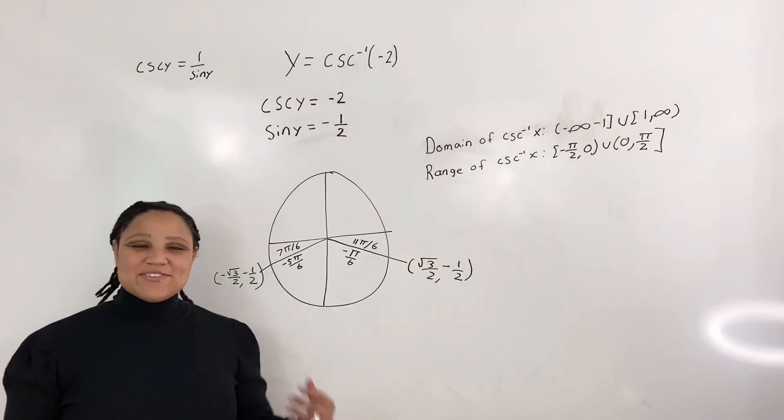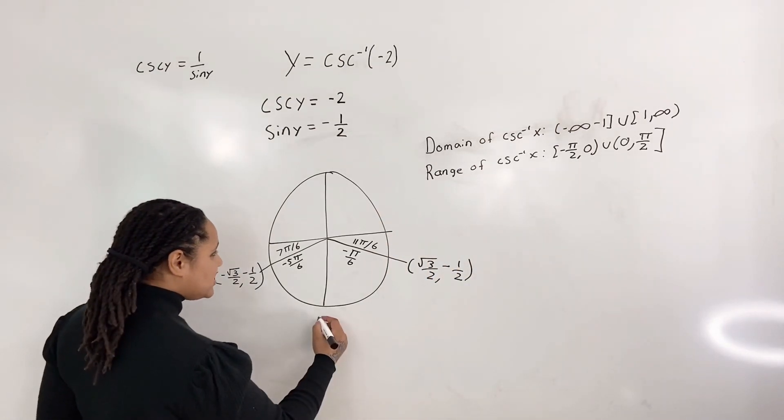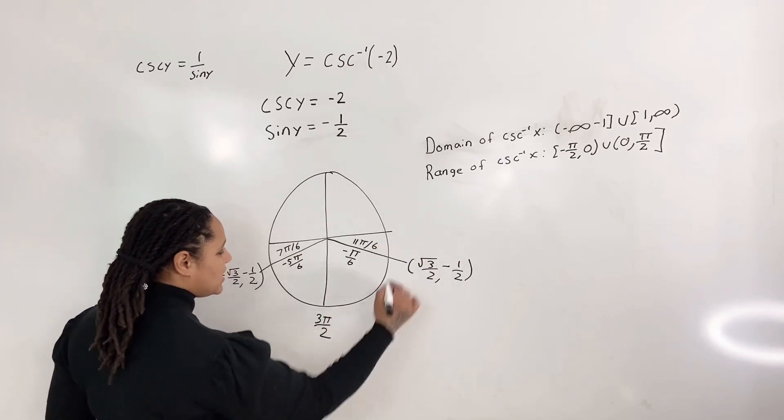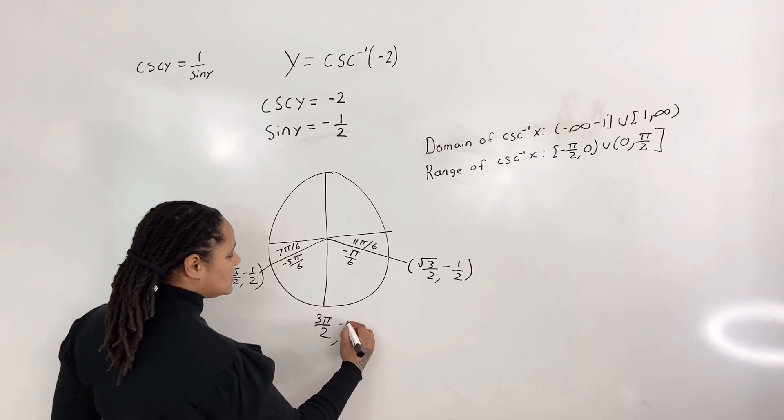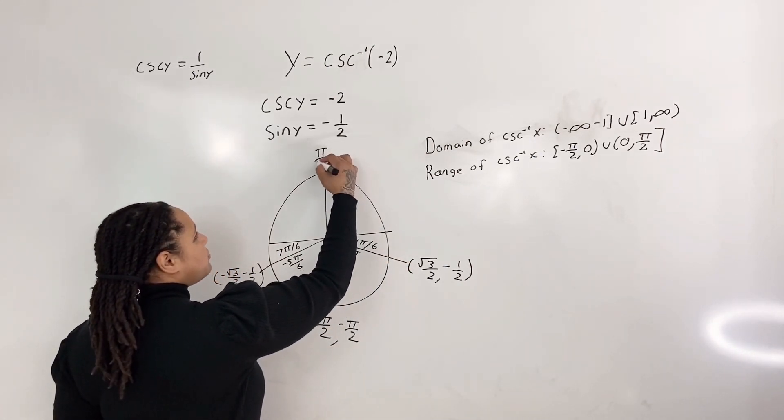Okay? So now we need to look at our unit circle. So this location would be 3 pi over 2. But if you go into the negative direction, you can also say that it is negative pi over 2. And of course, up here, it's pi over 2.